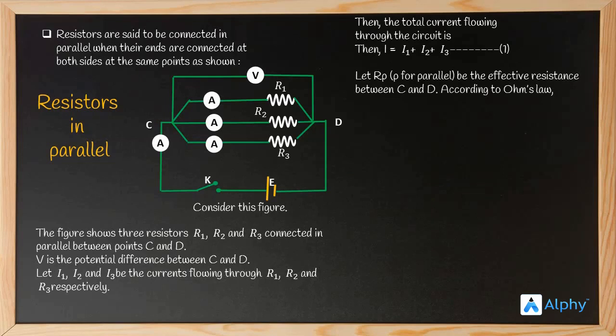We consider the effective resistance Rp, and for series we consider Rs as the sum of all resistors. By Ohm's Law, the current is directly proportional to the potential difference, and we use R as the constant of proportionality. So I is equal to V divided by Rp. Similarly, I1 is V by R1, I2 is V by R2, and I3 is V by R3.